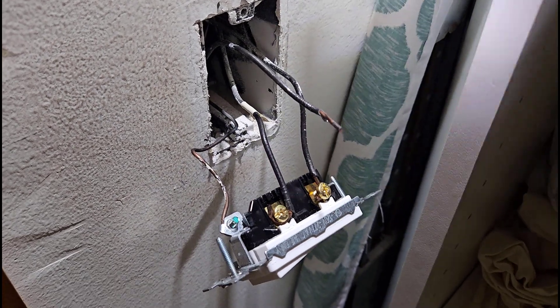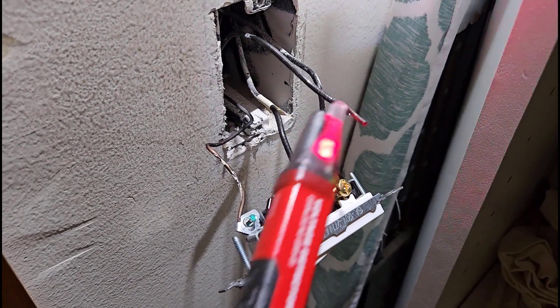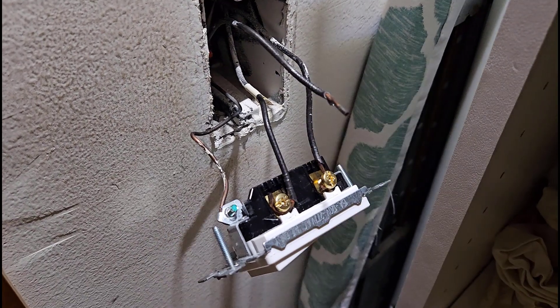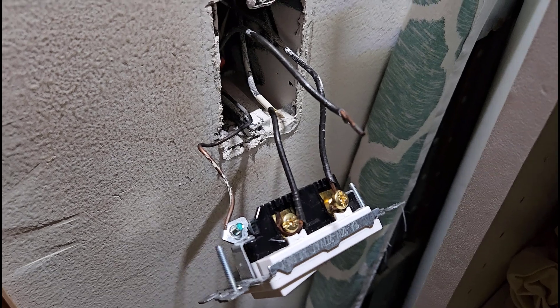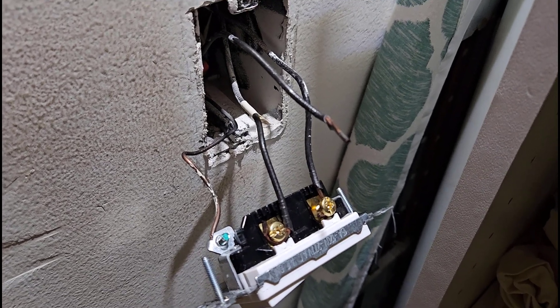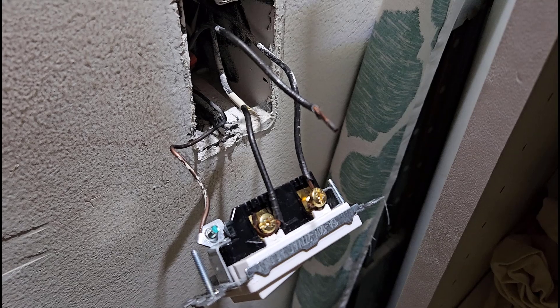So we now have the breaker back on and you can see that this wire here is live, so whoever wired this previously was effectively using the switch as a junction box and then had another wire running off to power something else which again is a no-no. So we're going to show you the proper way to do it.